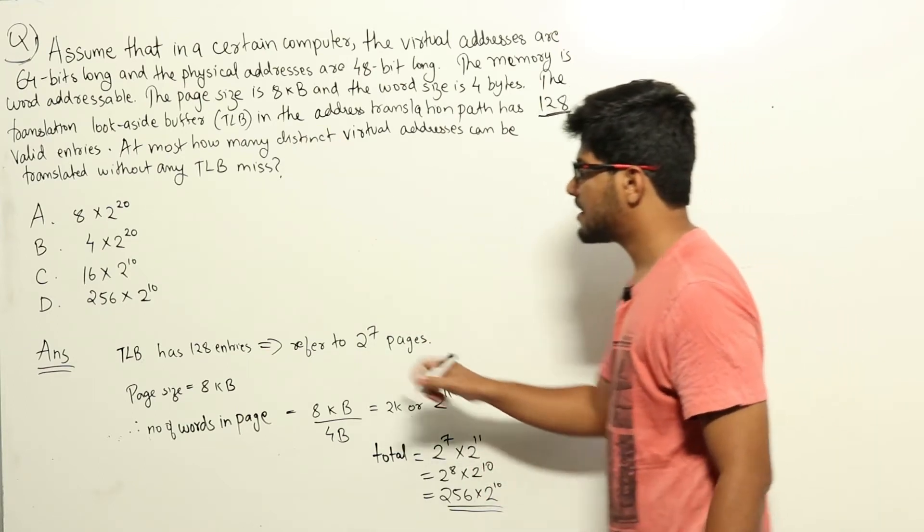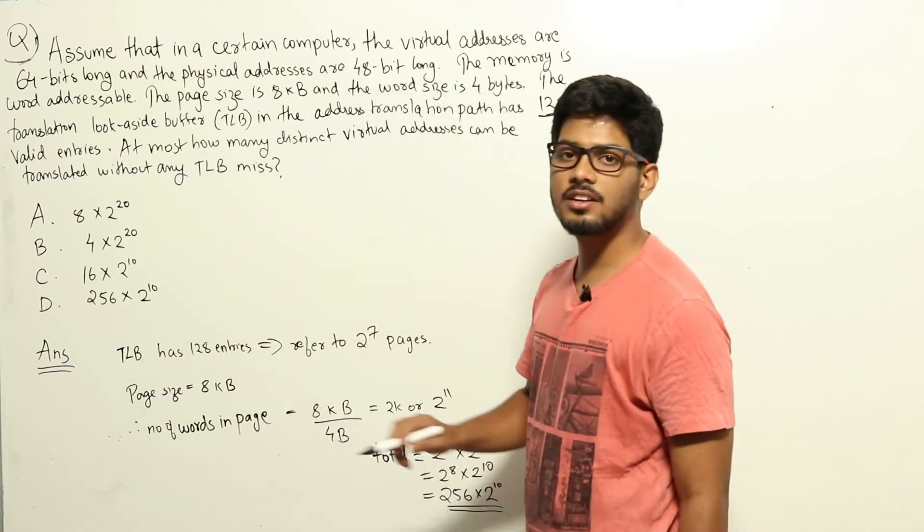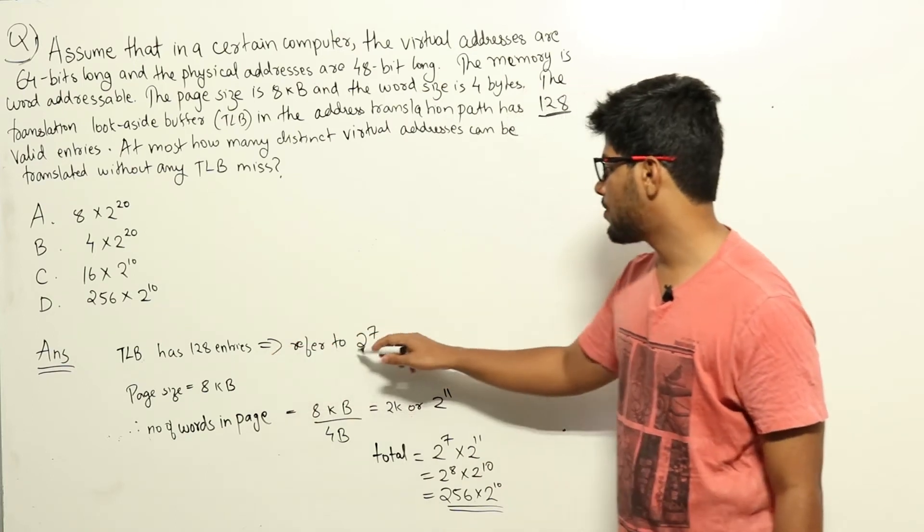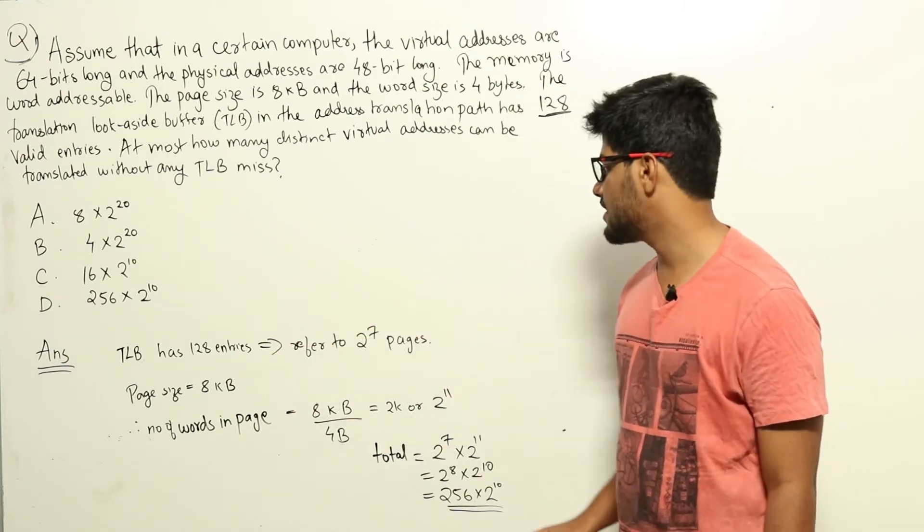In the question they have given us that the TLB has 128 entries. Now each entry will be pointing to one page in memory, meaning we can refer to 2 power 7 pages at the same time using the entries in TLB.